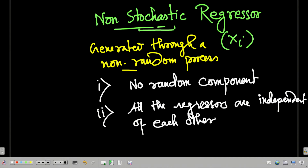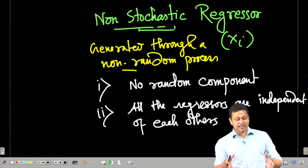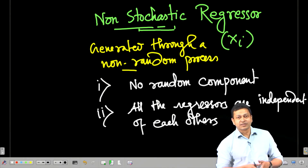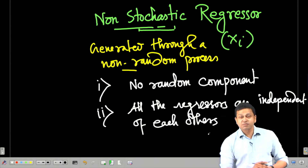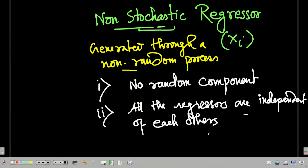That is the assumption I am going to make. Now, this is actually not a very realistic assumption, and that is why we have to deal with stochastic regressors. Because of this assumption, many things in regression get simplified. To actually explain the non-stochastic regressor, let me give you an example that will be easier for us to understand.